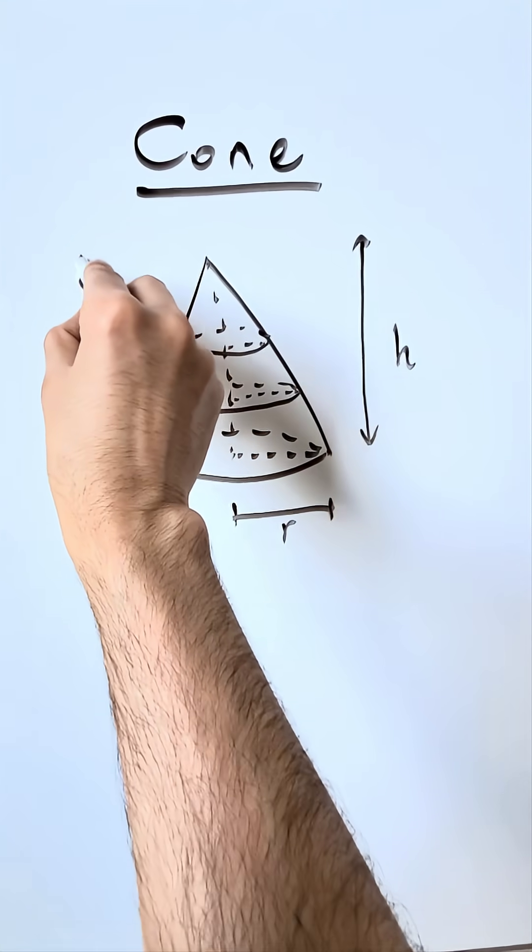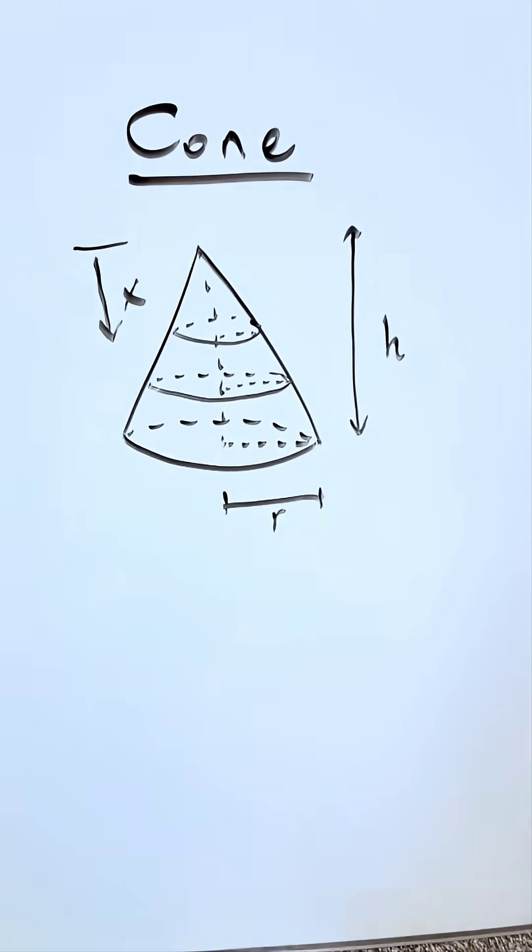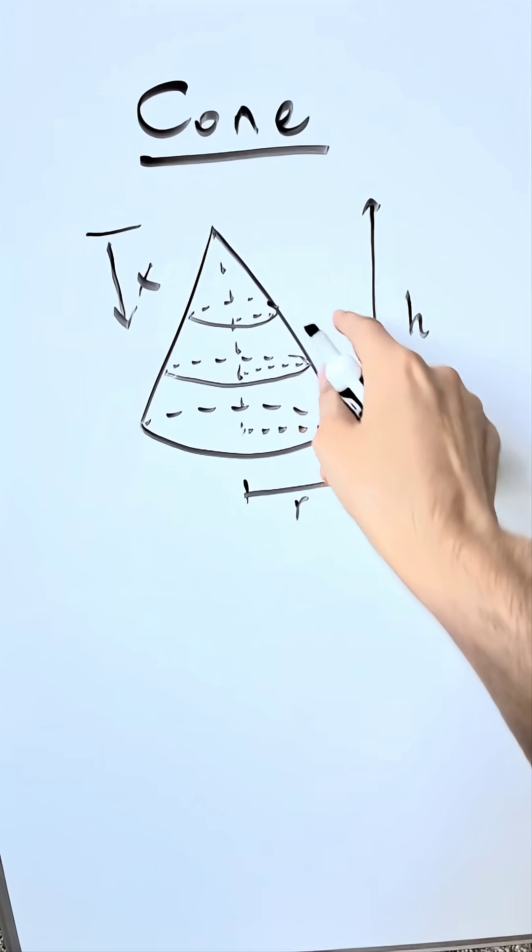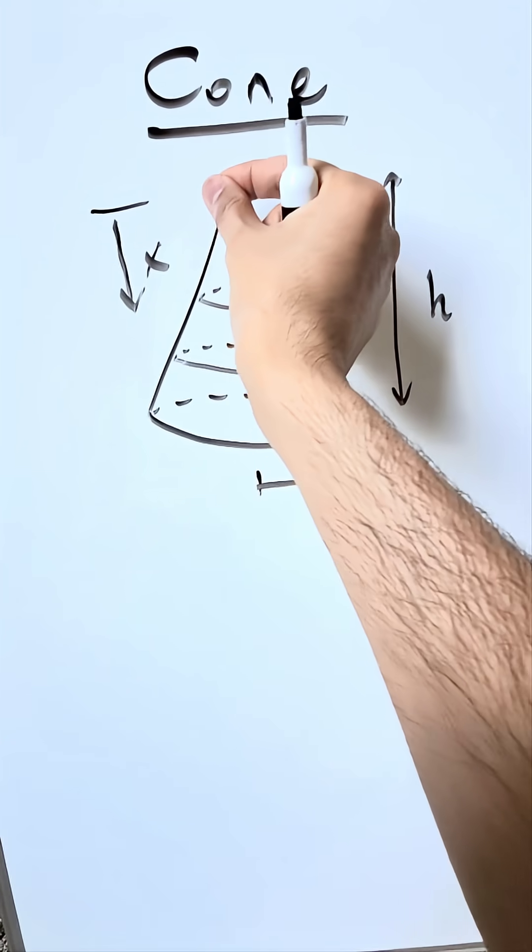You can. If you look here from the apex and you go down a certain x units, at that particular point you're looking at a radius. That radius will differ based on how far down you've gone because your cone is broad at the base and it converges towards the apex.